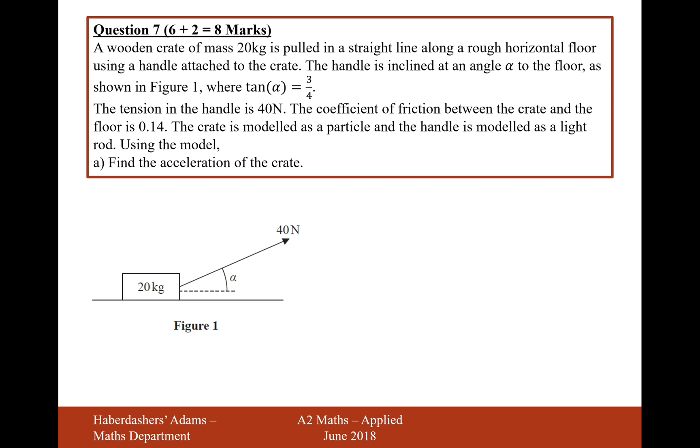A wooden crate of mass 20 kilograms is pulled in a straight line along a rough horizontal floor using a handle attached to the crate. The handle is inclined at an angle α to the floor in figure 1 shown where tan of α is equal to 3 over 4. The tension in the handle is 40 newtons.